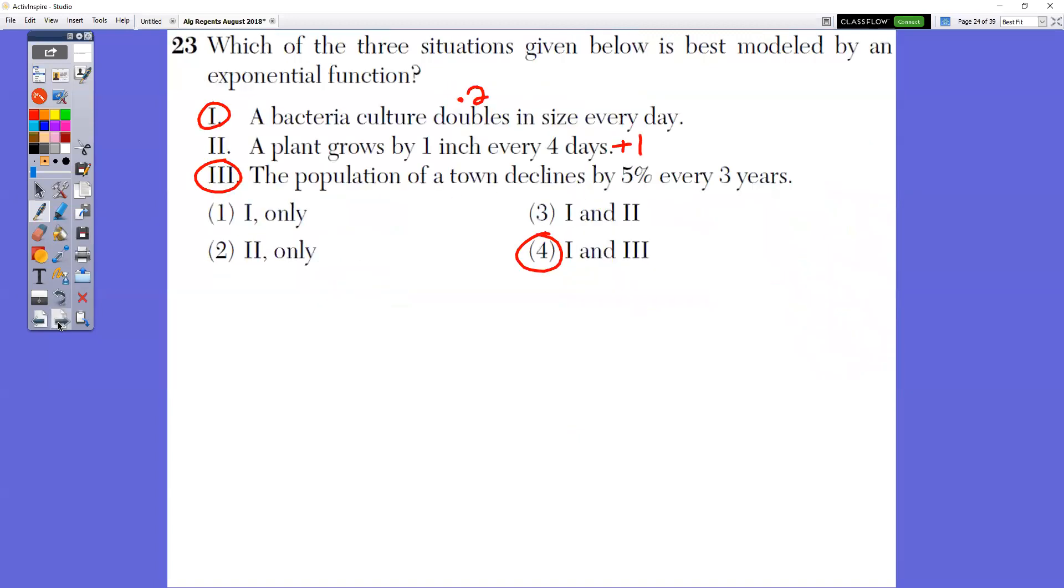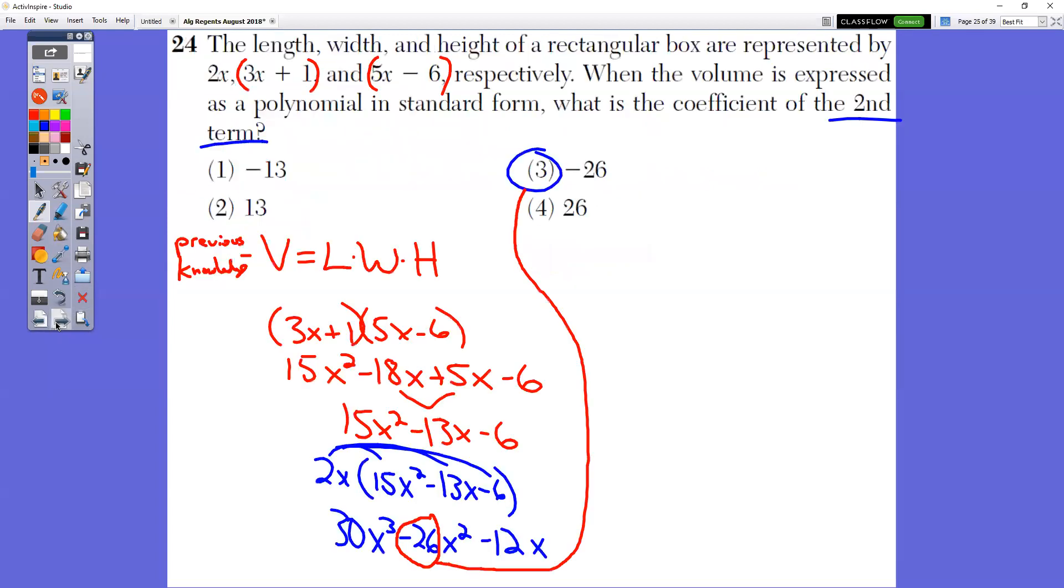In question number 23, which of the three situations given below is best modeled by an exponential? So an exponential is some sort of multiplying. So bacteria culture doubles, that's being multiplied by two, and the population of a town declines by 5%. So you're multiplying, all right, to get it lower and lower and lower. This one would be adding because it's growing by an inch every four days. So you'd be adding one inch every four days. That's adding, that's not multiplying. So one in three are multiplying. So choice four is exponential.